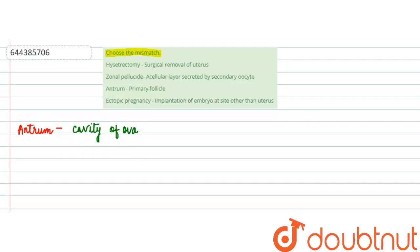If we understand about antrum, it is a cavity which is developed later in the development of Graafian follicle, and it is basically the cavity around the ova. It is a combination of blood plasma and secretory product of granulosa and theca cell.